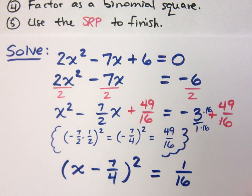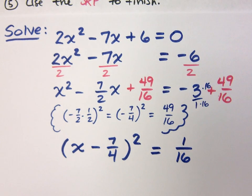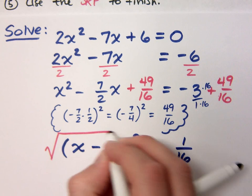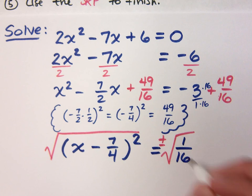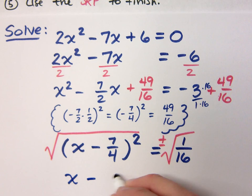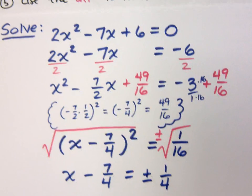Wait, what am I going to do now? Square root property. Step 5 is to use the square root property to finish this. Love the square root property. Again, if you're thinking about getting a tattoo. Just kidding. X minus 7 fourths equals what? Plus or minus 1 fourths.